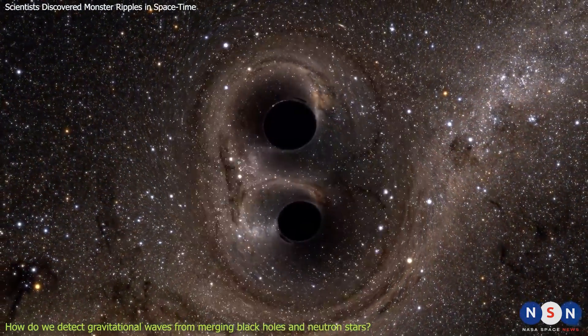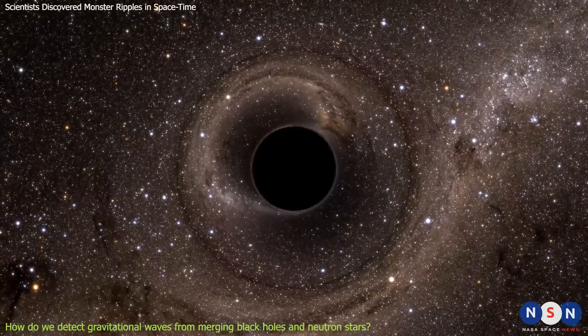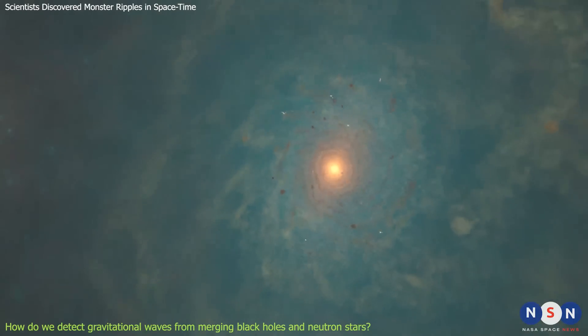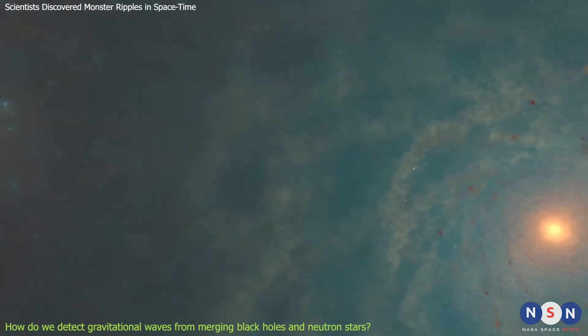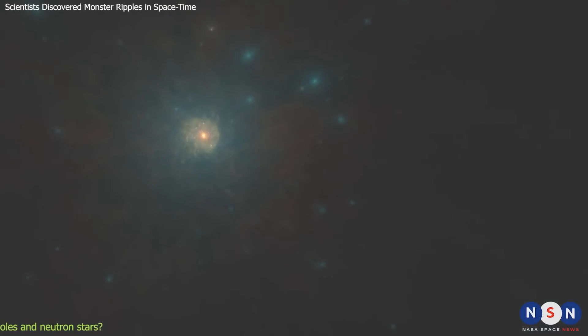For example, what happens when two supermassive black holes collide? How common are these events? And how do they shape the evolution of galaxies? To answer these questions, we need to look for a different kind of gravitational wave, one that is much longer and much weaker than those detected by LIGO and Virgo.